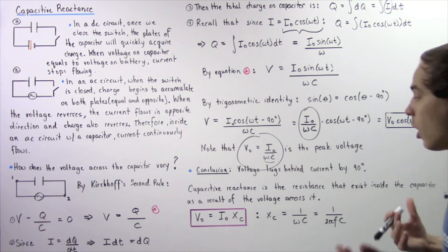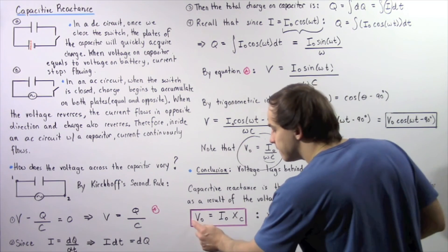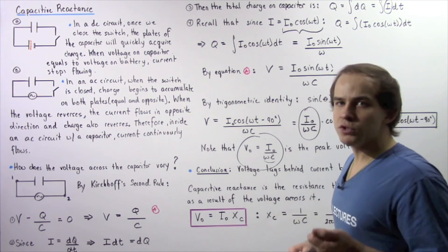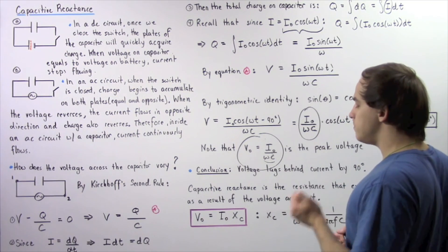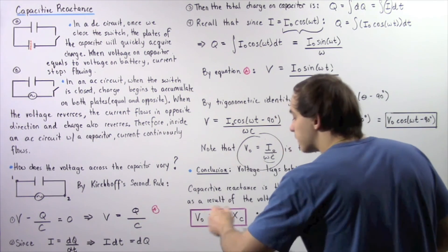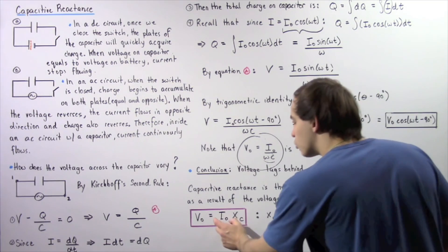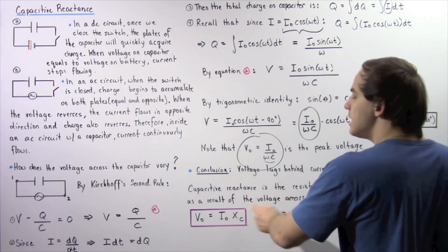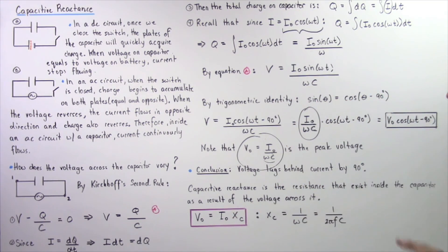If we wanted to, we can represent peak voltage and peak current using root mean square quantities. The root mean square voltage equals the root mean square current multiplied by the capacitive reactance Xc.